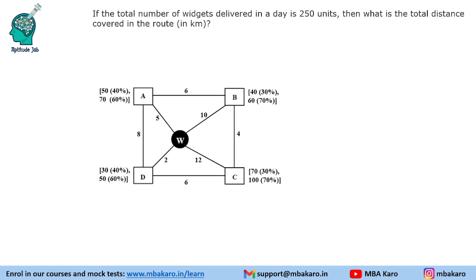Question 2: If the total number of widgets delivered in a day is 250 units, what is the total distance covered in the route? This question requires making combinations of numbers, which takes time. Here is a quick way: since all values are multiples of 10, remove the zero. Now it's about odd and even numbers — odd plus odd gives even, odd plus even gives odd, and even plus even gives even.